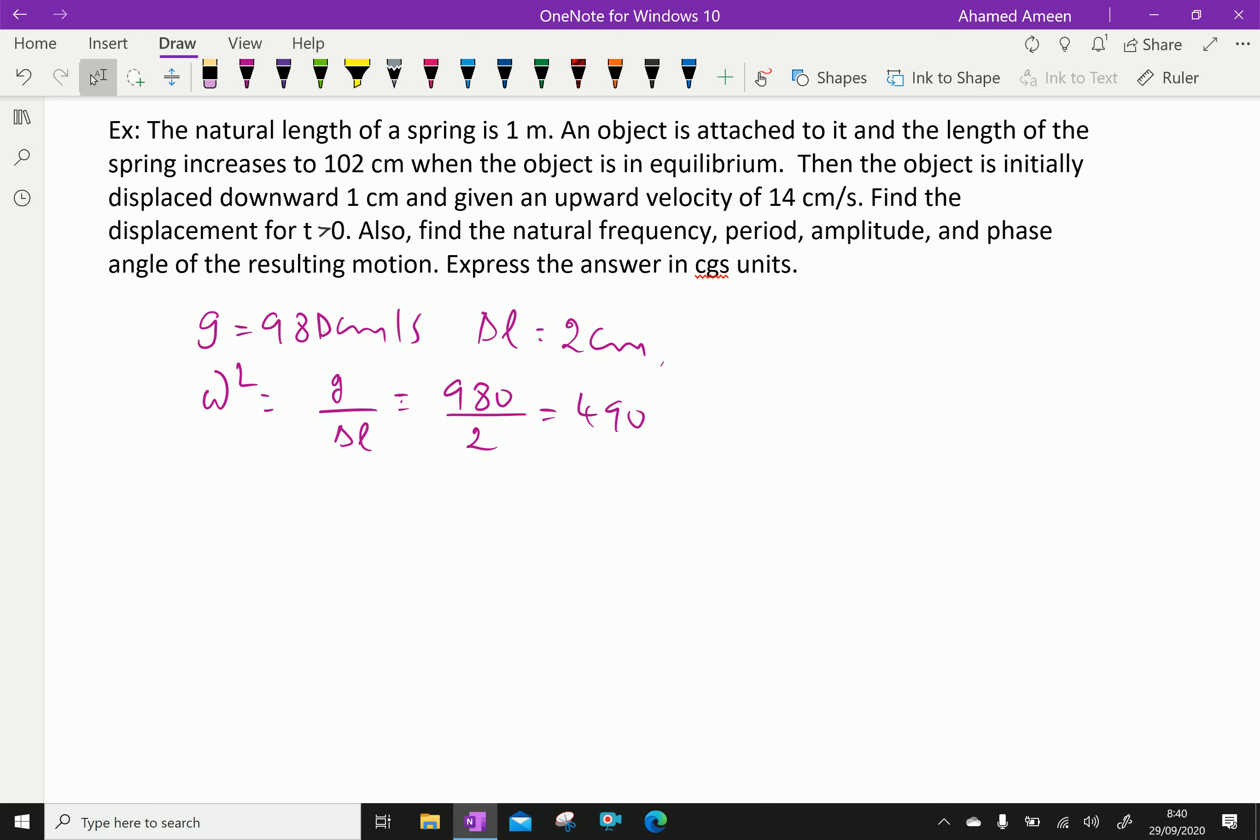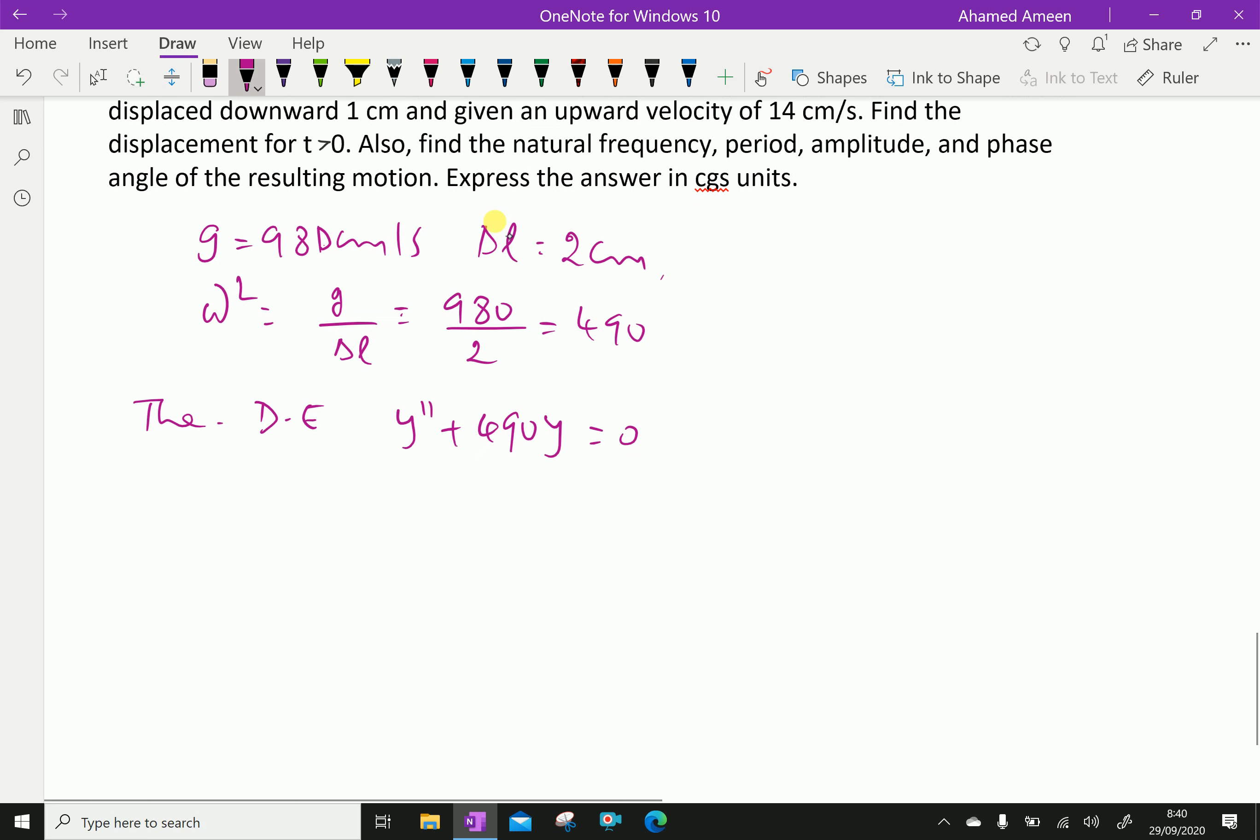Then the differential equation is y double prime plus 490y equals 0. Y of 0 is minus 1 because it is a downward motion, and y prime of 0 is 14 centimeters, which is given as the upward velocity.